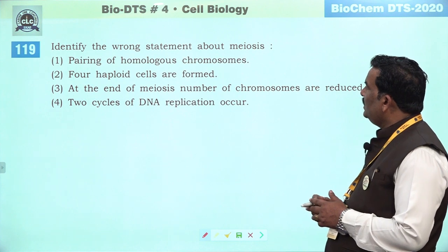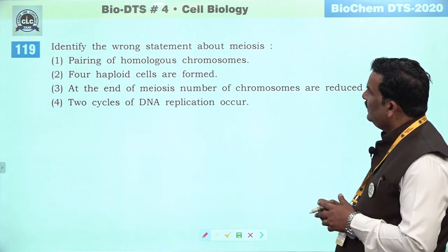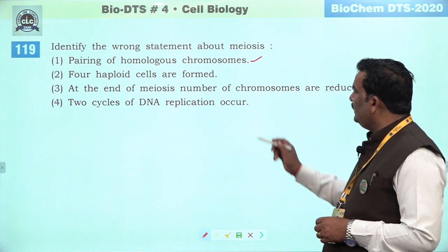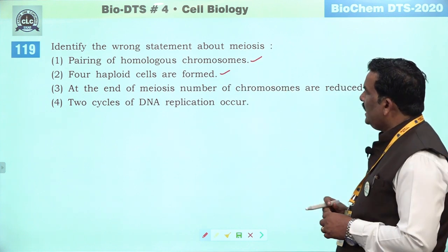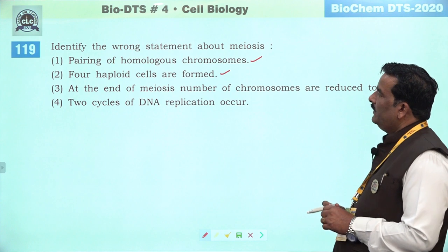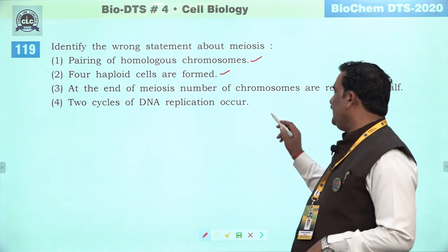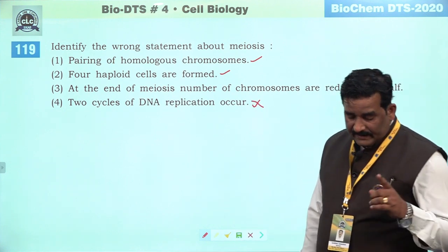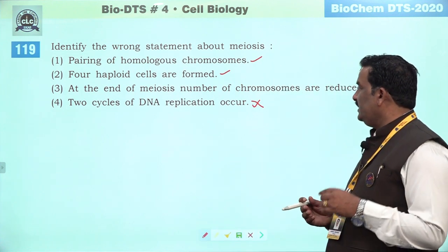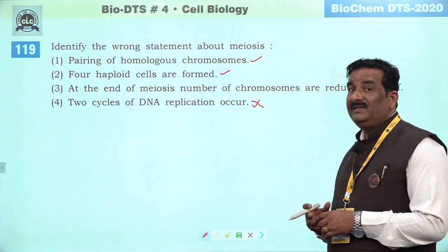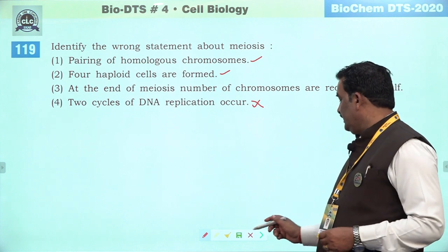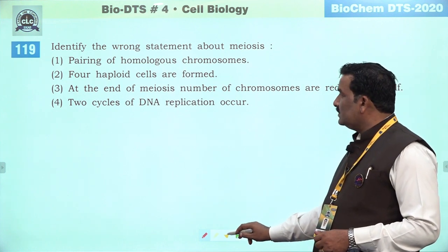Next question: identify the wrong statement about meiosis. Pairing of homologous chromosomes — bilkul sahi hai. Four haploid cells are formed — bilkul sahi hai. At the end of meiosis number of chromosomes are reduced to half — sahi hai. Two cycles of DNA replication — no — ek baar DNA ka replication hota hai, woh bhi aapke interphase first mein. First interkinesis mein yeh process nahi hoti. Fourth is the wrong statement — yahi right answer hai.